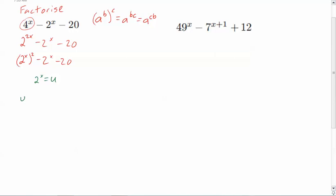So here we go. We're going to go u squared minus, and then I'm going to put u in for that 2 to the x as well, and then I'm going to go minus 20. Now this can just be factored. It's very easy now.